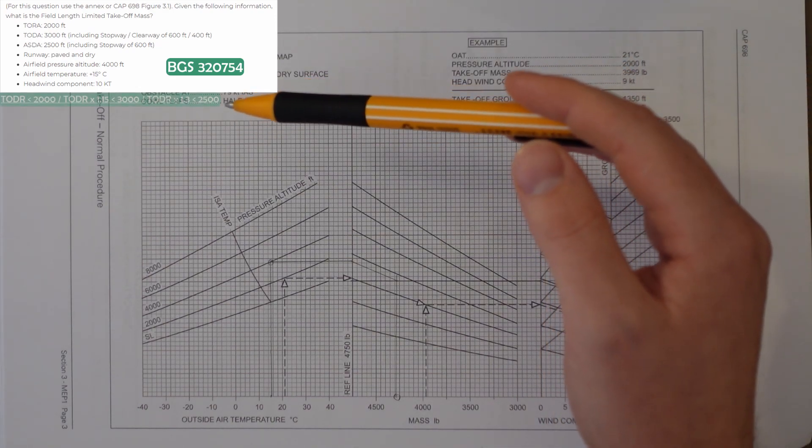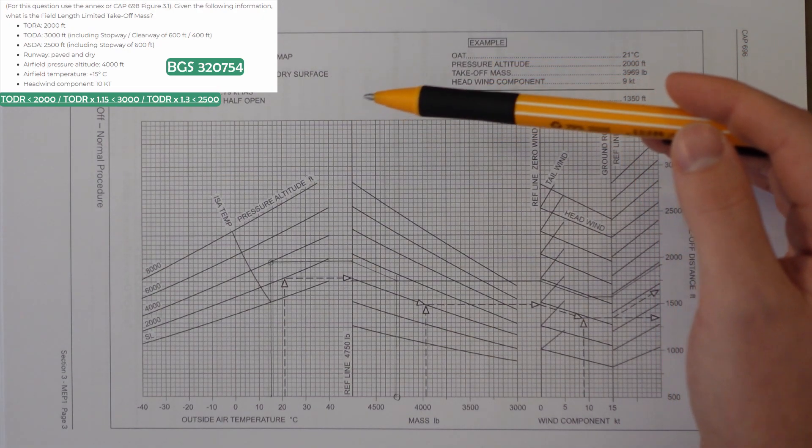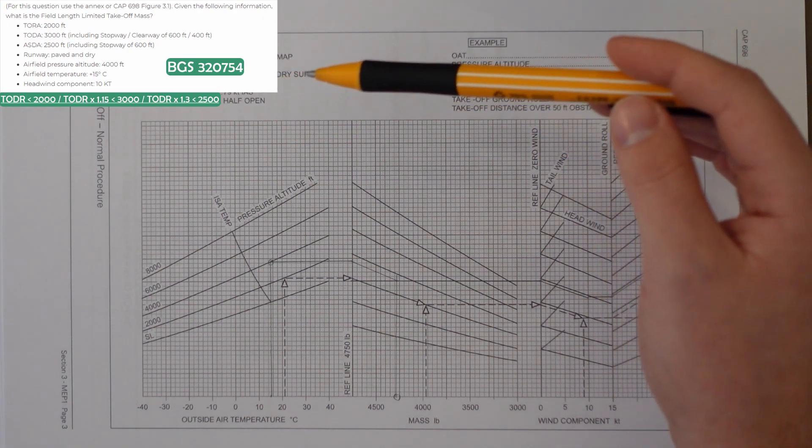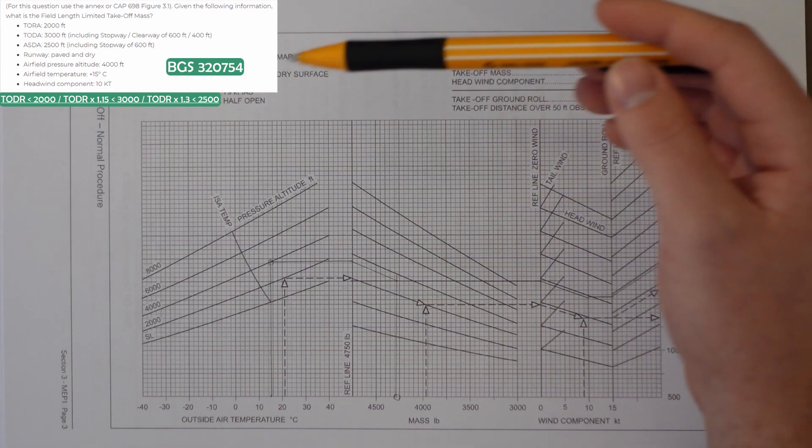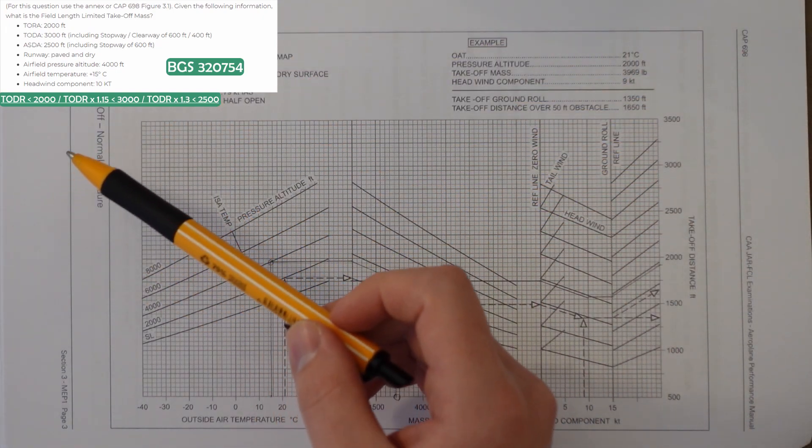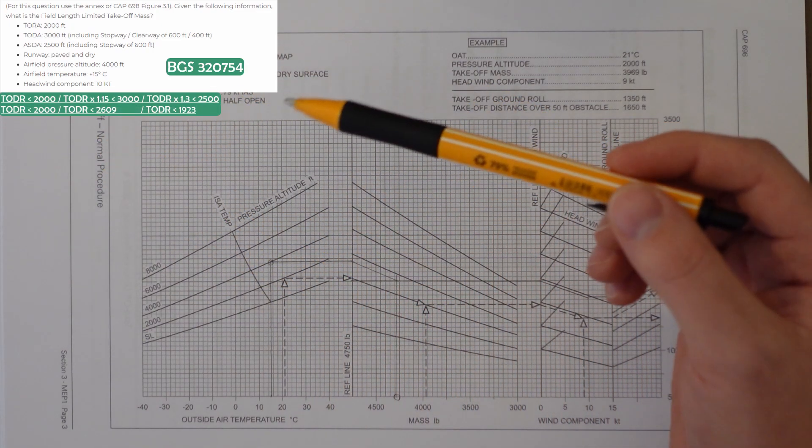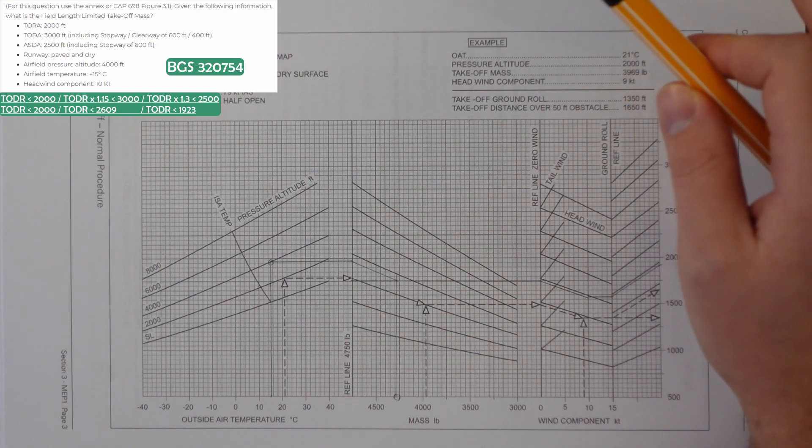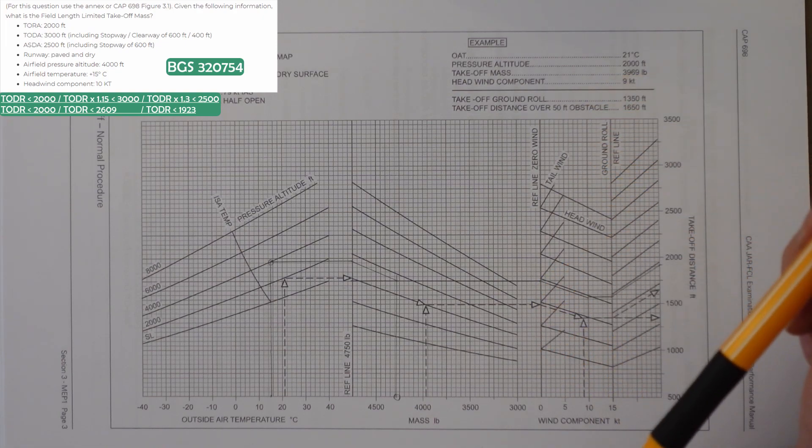The takeoff distance required has to be less than 2,000 feet. Takeoff distance required times 1.15 has to be less than 3,000, and the takeoff distance required times 1.3 has to be less than 2,500. So our limiting distances would be 2,000, 2,609, and 1,923 feet. There's no slope or condition factors to apply in this example. So we use 1,923 feet.